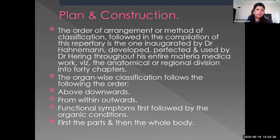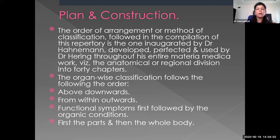The plan and construction: the order of arrangement followed in the compilation of this repertory is the one inaugurated by Dr. Hahnemann, developed, perfected, and used by Dr. Hering throughout his Materia Medica work — namely the anatomical or regional division in 40 chapters. The organ-wise classification is done from above downwards, from within outwards, functional symptoms first followed by organic condition, and first the part then the whole body.